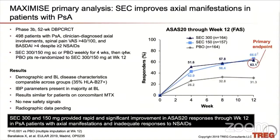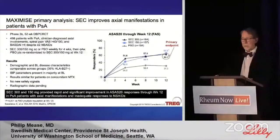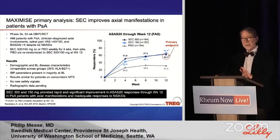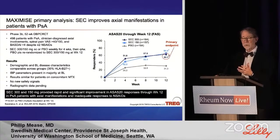Here is data from the only trial dedicated to axial PsA to date — the MAXIMIZE study. All other data for TNF inhibitors and JAK inhibitors has been extrapolated from ankylosing spondylitis trials. About 500 patients were entered; the key point was whether the investigator thought they had axial PsA. There was not a requirement for an imaging inclusion criterion, although imaging was done throughout the trial.